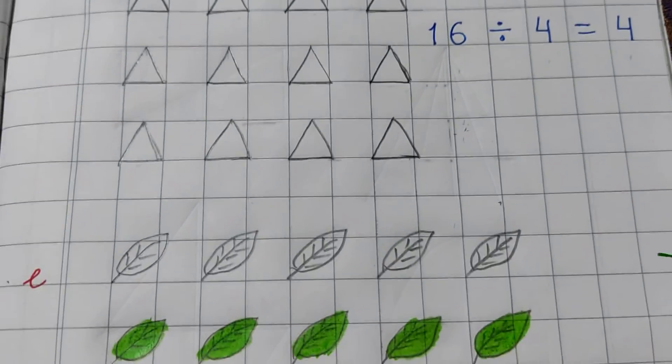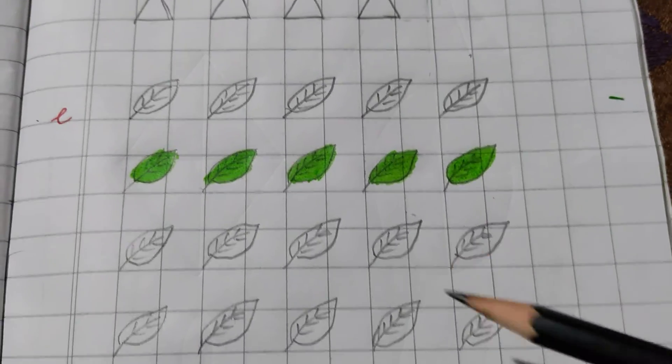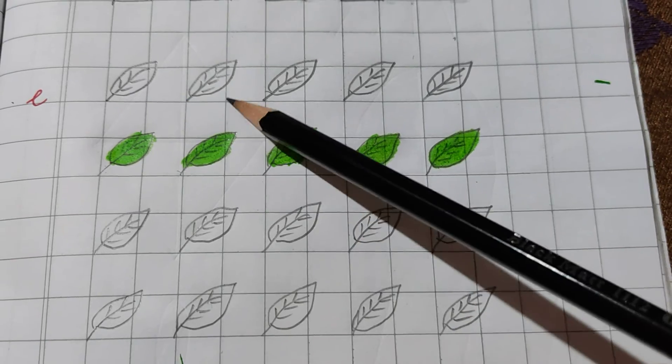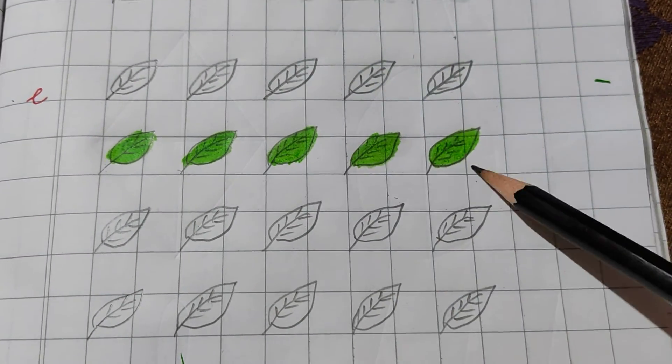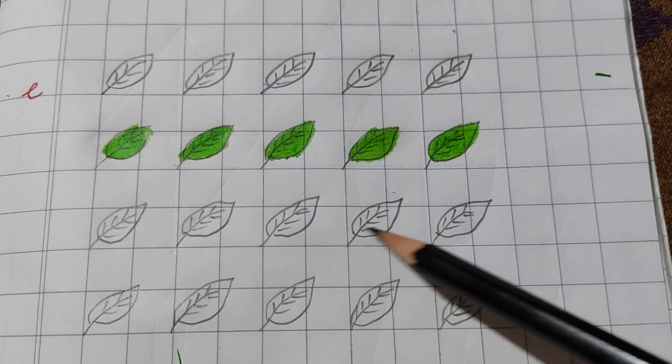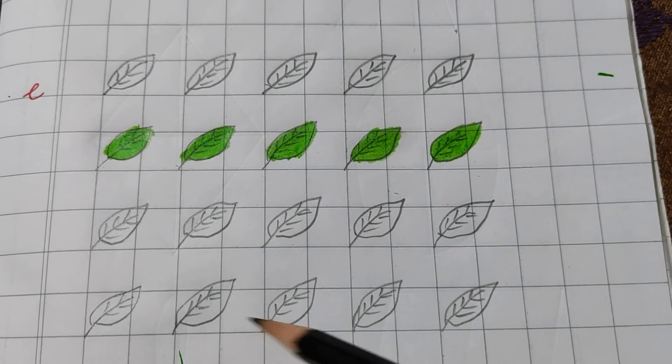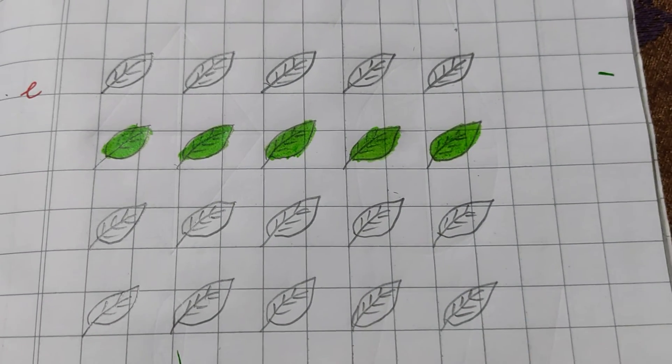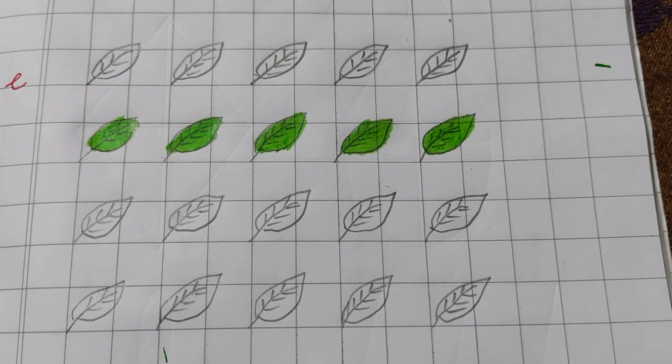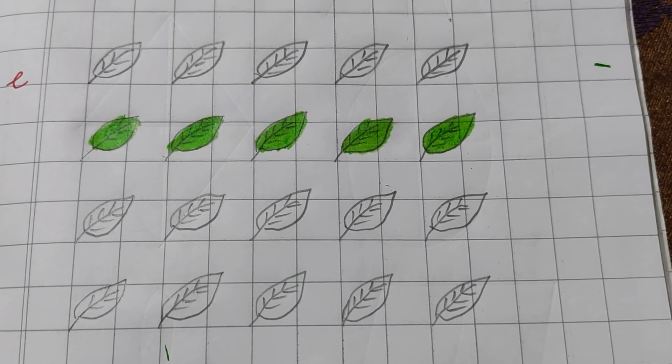Now, in the next part, I have drawn some leaves. So, these are 1, 2, 3, 4, 5, 6, 7, 8, 9, 10, 11, 12, 13, 14, 15, 16, 17, 18, 19, 20. These are 20 leaves. So, I have to divide these 20 leaves by 4. I have shown it. 20 divided by 4.